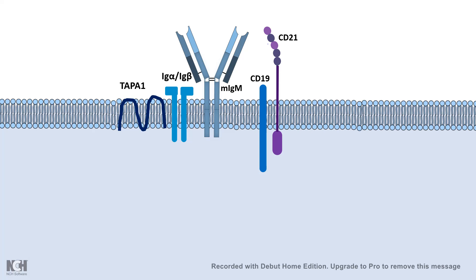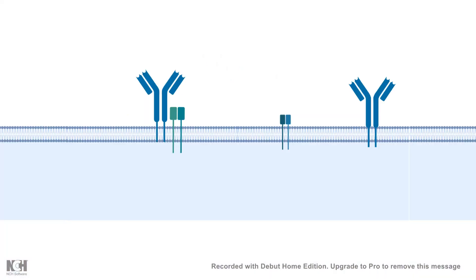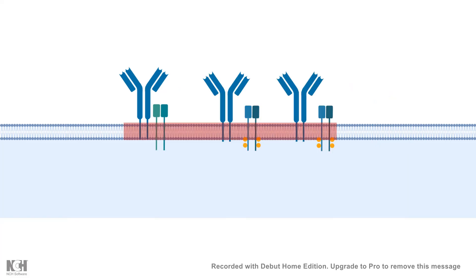The antigen binds to CD21 and the membrane-bound IgM — the B cell receptor. Normally, when there is no pathogen invasion, the B cell receptors are separated and uniformly distributed across the cell membrane. But when the cell encounters a pathogenic antigen, the B cell receptors cluster in the lipid rafts — specific subdomains of the B cell surface — where many important molecular and cellular signaling events occur.